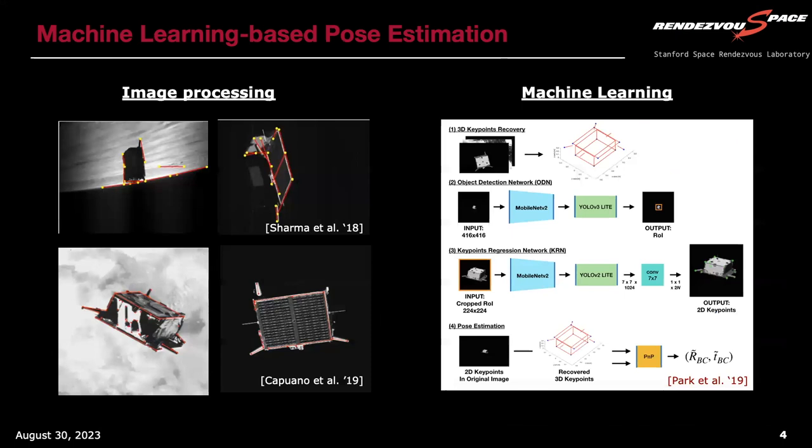In the past we relied mostly on image processing algorithms, but nowadays machine learning is taking over because it is very fast to compute the inference, and it pretty much always gives you an answer, unlike image processing-based algorithms which have very low availability of solutions for these challenging space images.